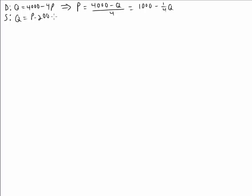I could do the same thing for supply, and basically I just add 200 to both sides, so P equals Q plus 200. Now we can graph this. There are a few ways you can go about solving these problems.